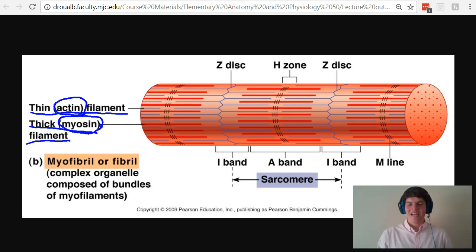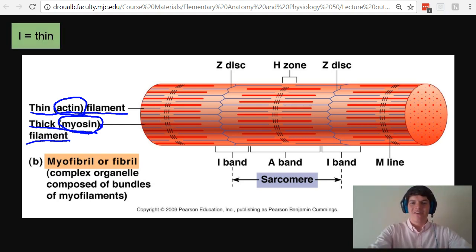I-band. This area only has the thin filament in it. Think about the letter I. It's a very thin letter. Unlike the letter A or Z or H, it's very, very thin.